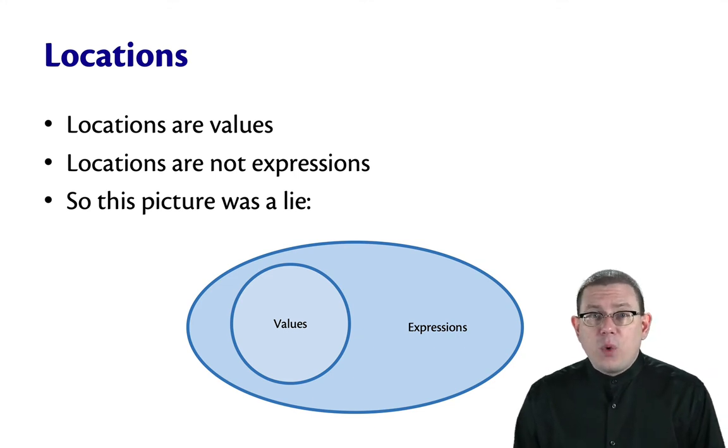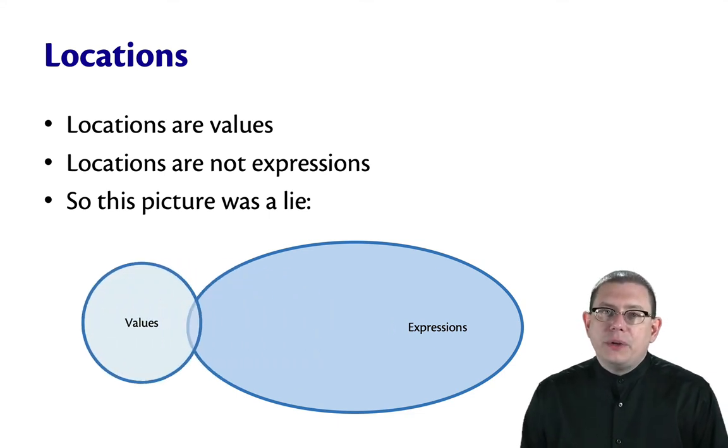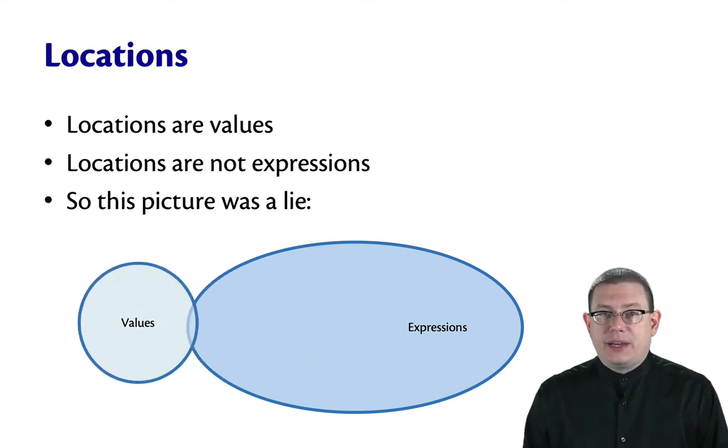So as I warned you back in the first or second week when I showed you this picture, this Venn diagram is not telling the whole truth. For the values we were looking at back then and for the first month of the course, values were all expressions. But now we have values that are not expressions.